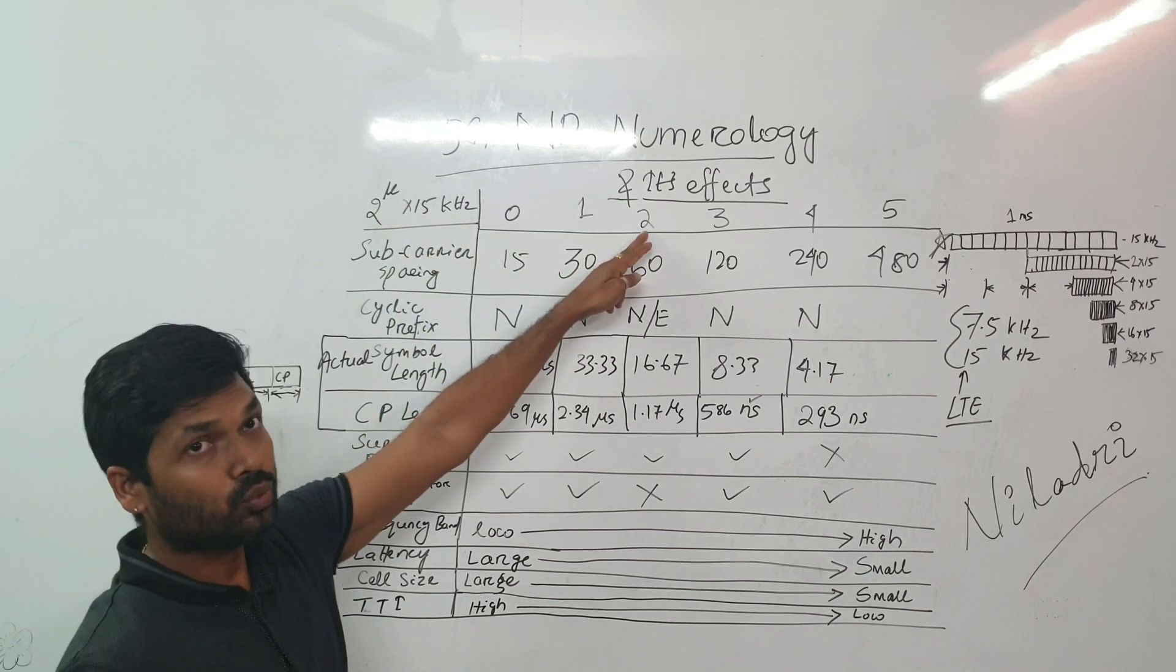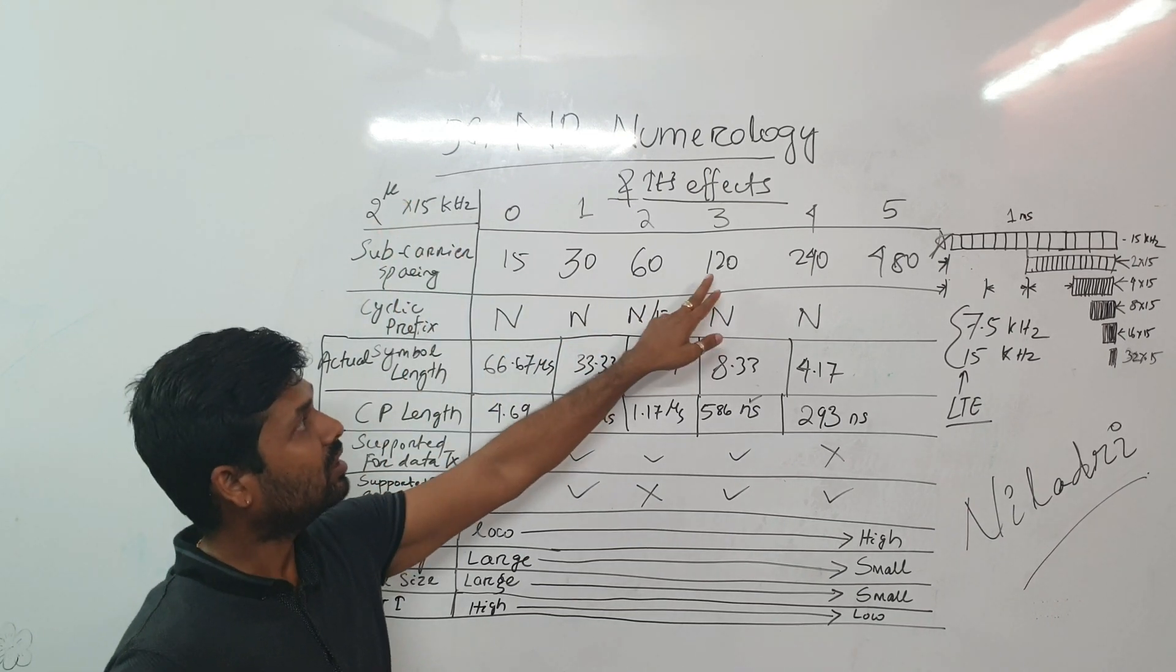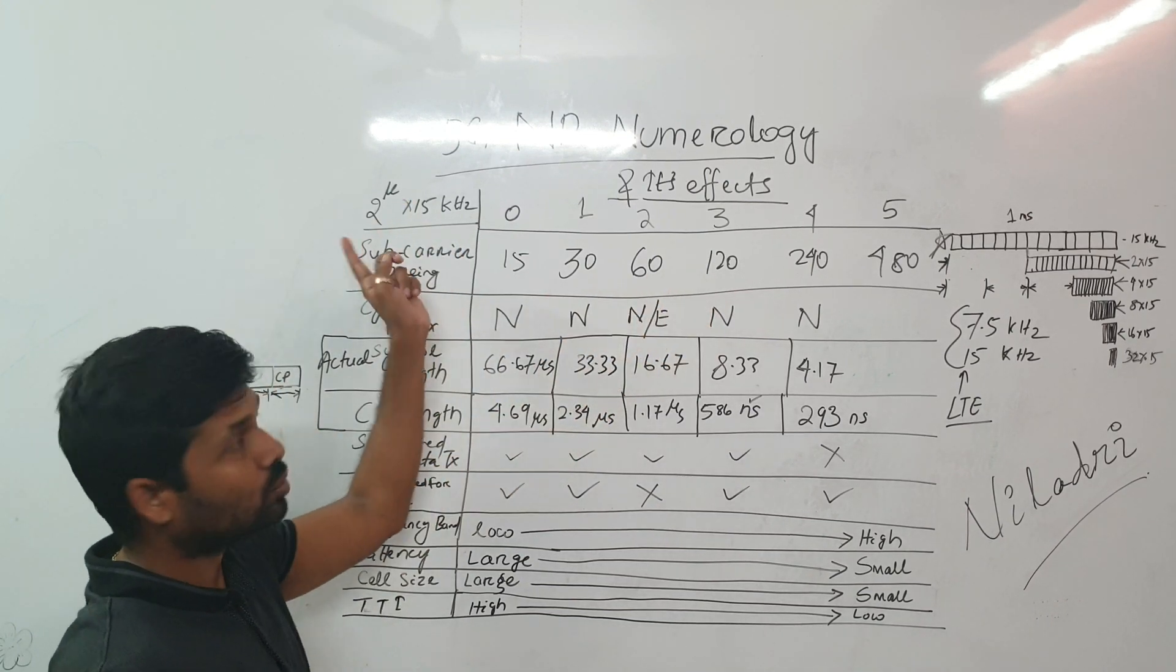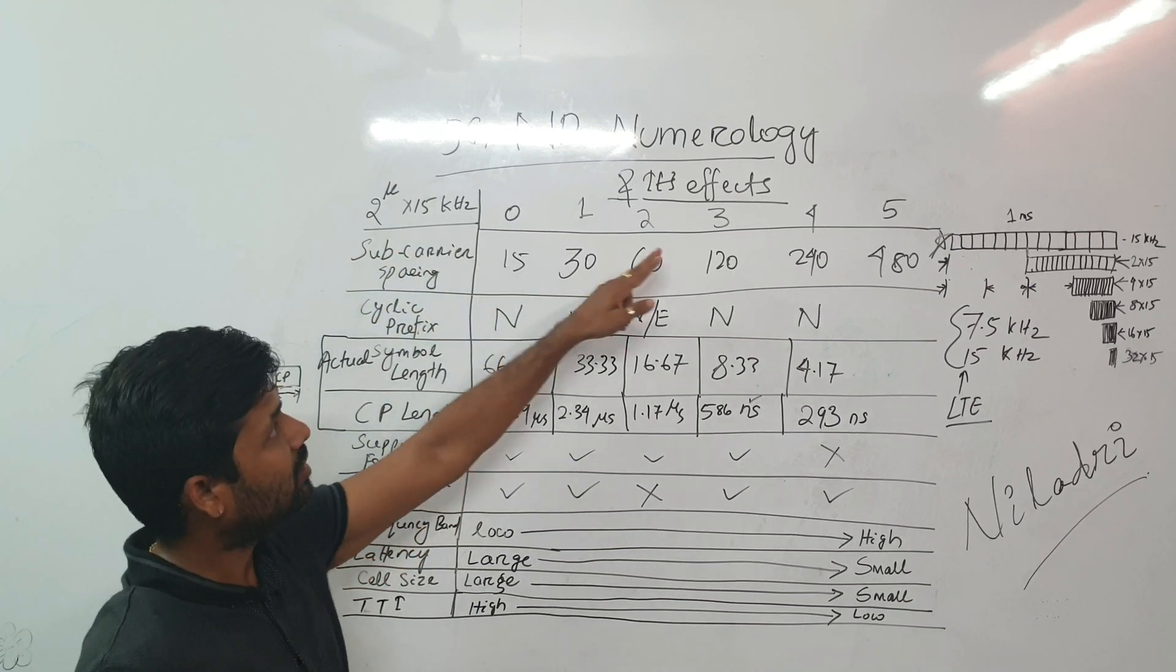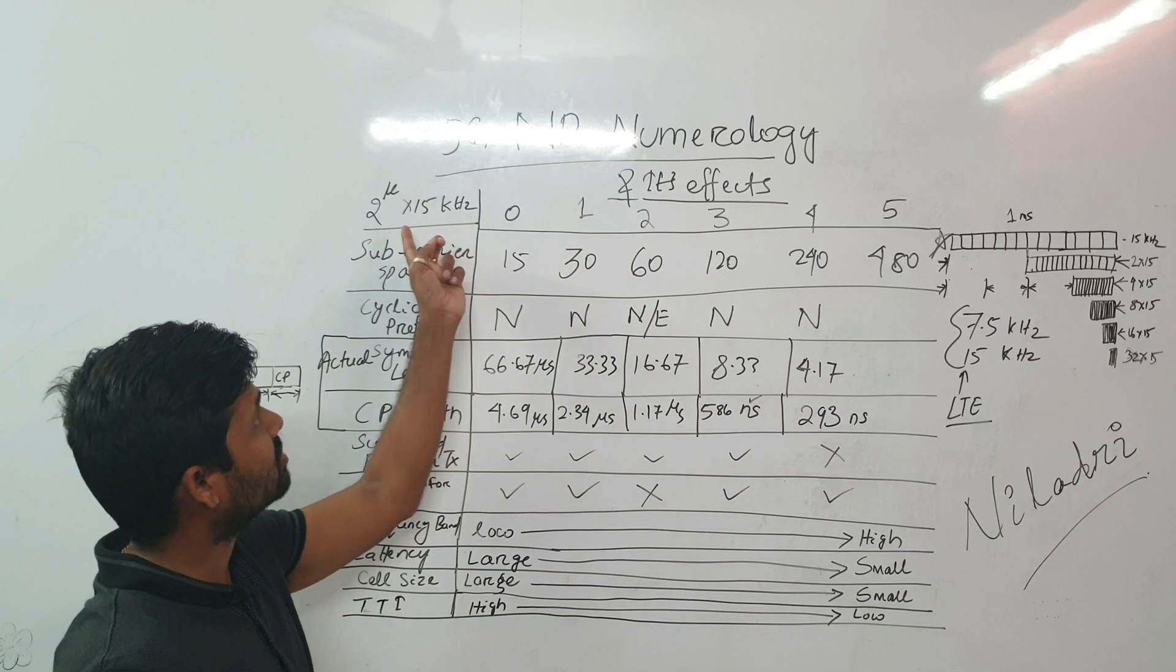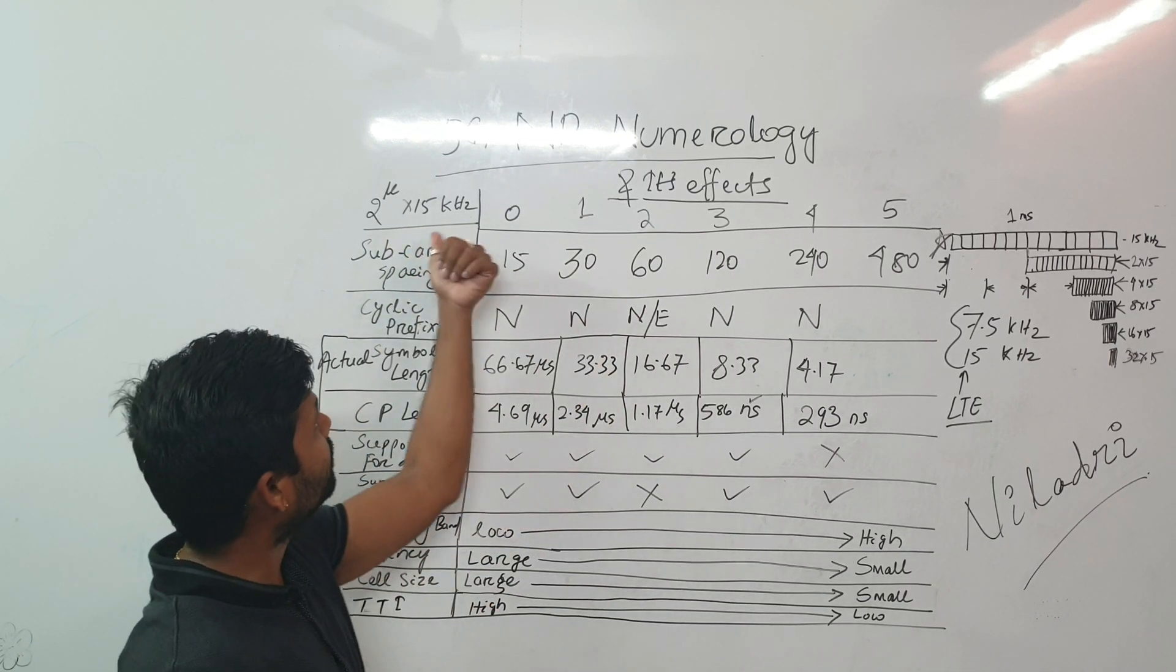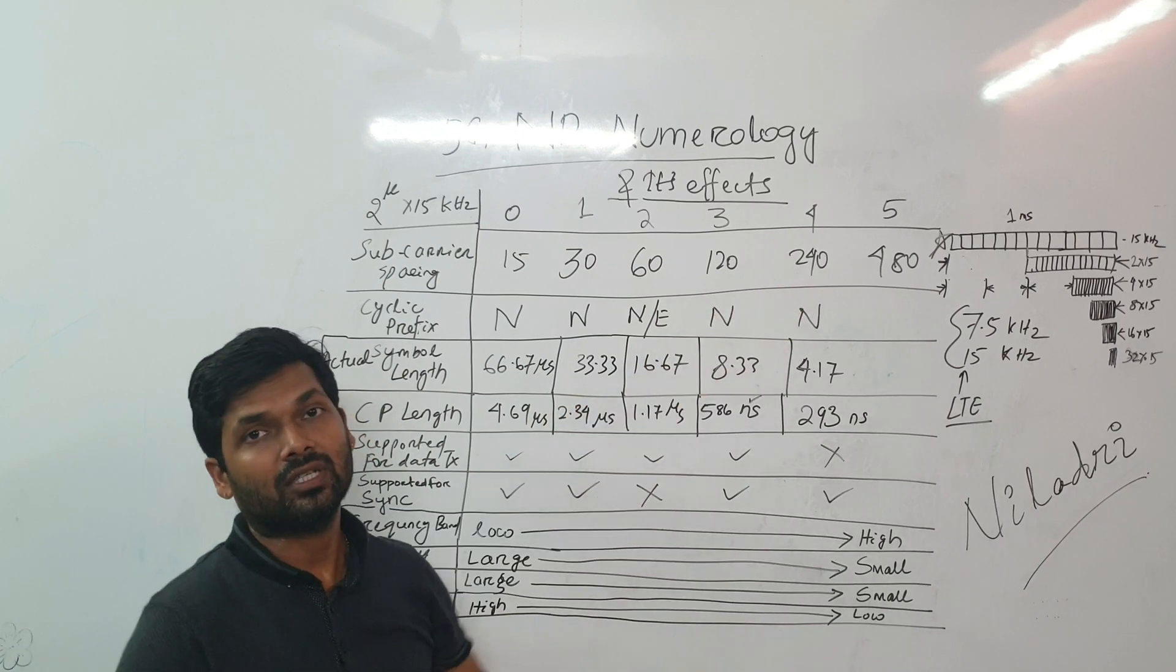2 to the power 2 is 4 into 15 is 60. 2 to the power 3 is 8 into 15 is 120. 2 to the power 4 is 2 into 2 into 2 into 2, 4 times 2 into 15 that would be 240 kilohertz.